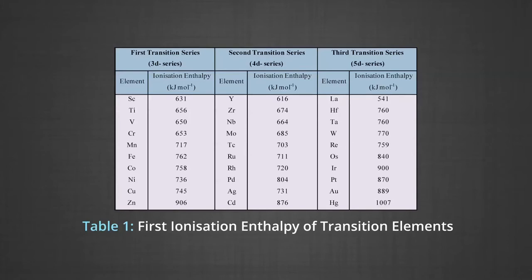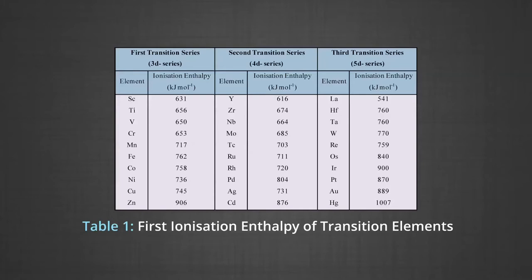These values show that the successive ionization enthalpies of these elements do not increase as steeply as in the main group elements. Many small variations also occur, although the first ionization enthalpy for successive elements generally increases; the magnitude of the increase in the second and third ionization enthalpies is much higher along the series from scandium to copper.